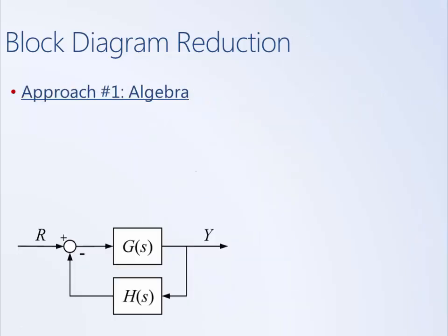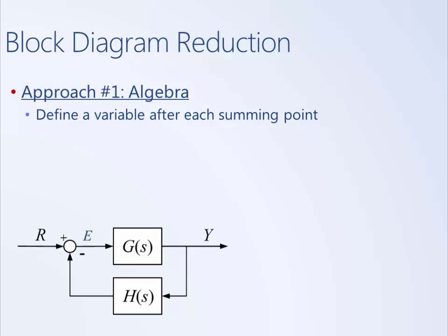The first approach we're going to learn is called block diagram algebra. Here again we have this negative feedback system, as shown on the previous slide, and we want to derive that reduction — the transfer function for an input R and an output Y.